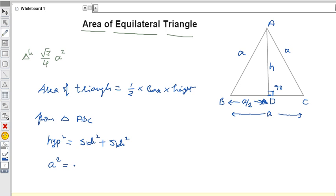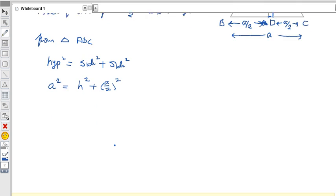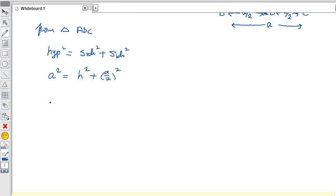One side is h, and another is a by 2, so D to C is also a by 2. Therefore, a squared equals h squared plus (a by 2) whole squared. From this, I will find the h value first. So h squared equals a squared minus (a by 2) whole squared.